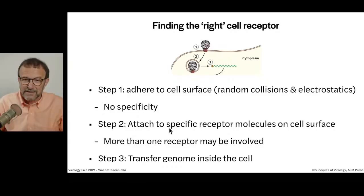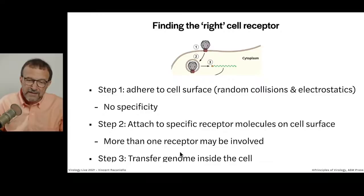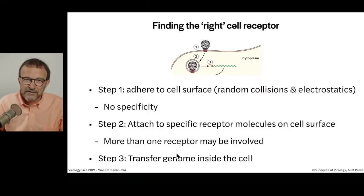Step two: if a random collision has put the virus in the right place on the plasma membrane, the virus can attach to a receptor molecule and that can lead to infection. More than one receptor may be involved, as we will see. Step three, the genome is transferred inside the cell — though that's not always exactly correct. There are examples of viruses where the genome doesn't leave the particle. This whole process leads to the internalization of the particle in some form or another.